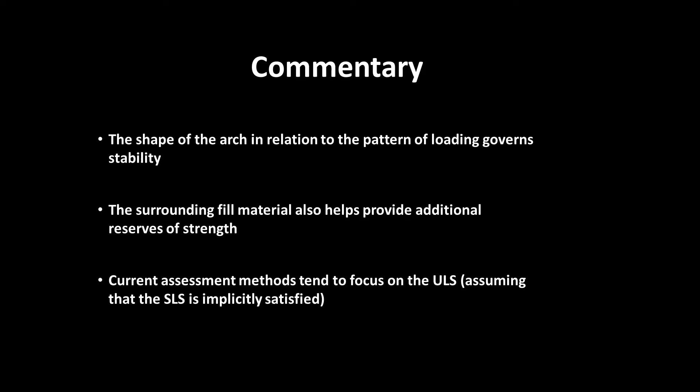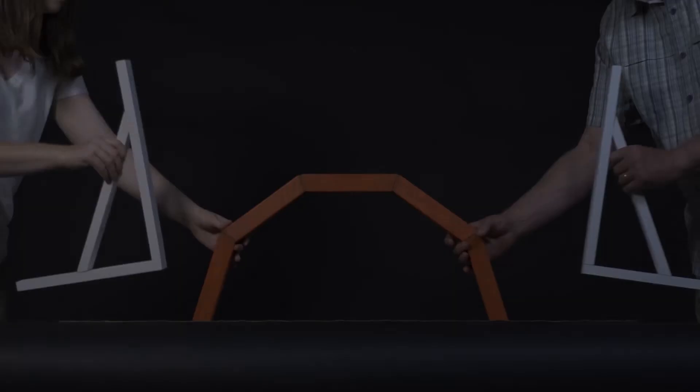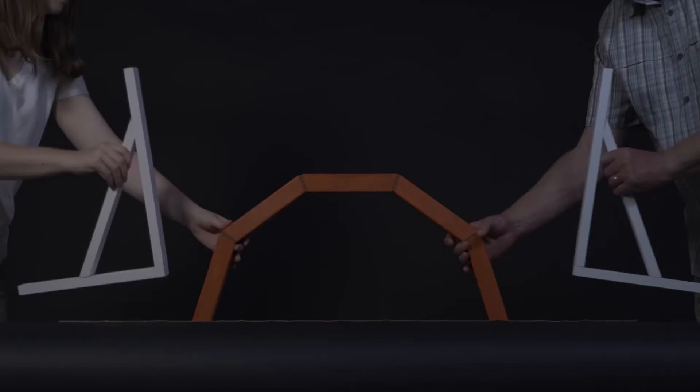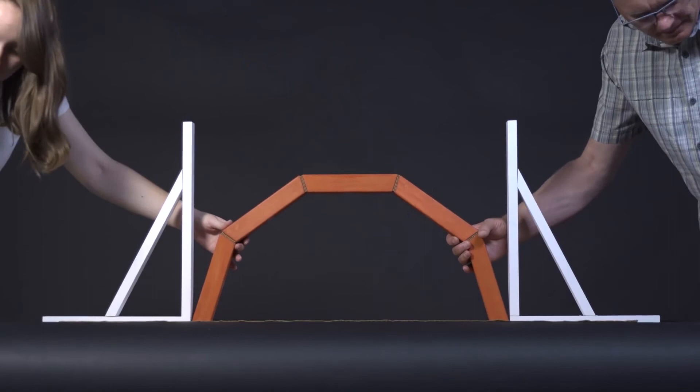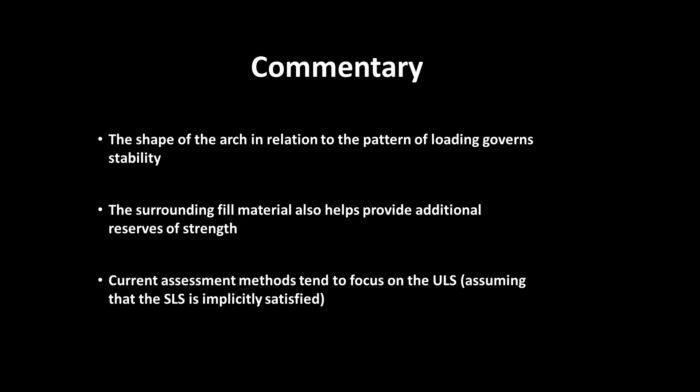What we haven't talked about yet is that if you surround your arch with fill material, which we particularly do in masonry arch bridges, then you can get additional reserves of strength. Basically, the fill disperses the applied load through the fill, which is beneficial. It pre-stresses the barrel just from its self-weight. As the arch tries to sway into the surrounding fill material, you get horizontal passive restraint.